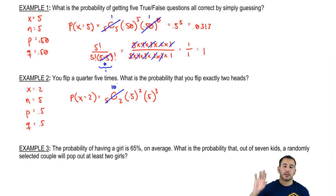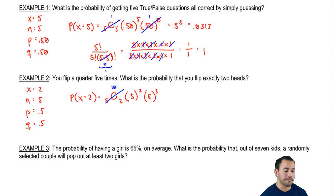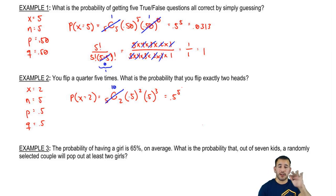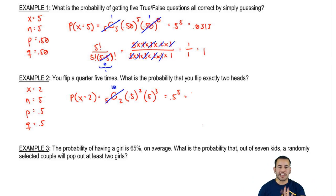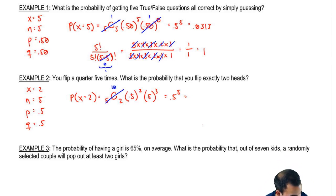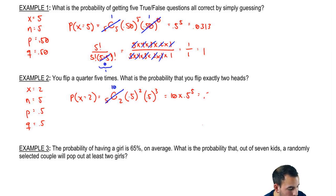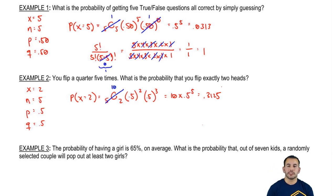Feel free to post questions about how to do the combination function on your calculator — most are pretty similar. So this ends up being 0.5 to the fifth, because 0.5 squared times 0.5 to the third — you just add up the exponents. So 10 times 0.5 to the fifth gives us 0.3125. There's a 31% chance you'll flip a quarter five times and get exactly two heads.